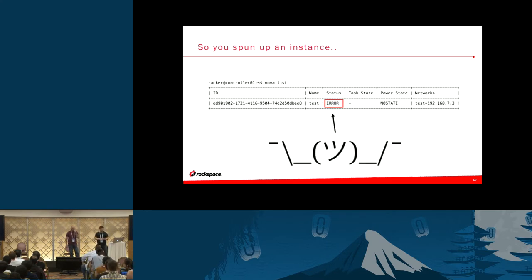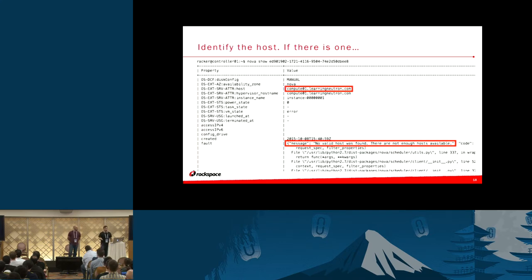Let's say you go to spin up an instance and it's in an error state — the VM has clearly failed to launch. A few things we notice here, other than the error state, is that you are given a network address, so you have an IP, which tells us at least that the Neutron API is functioning properly. When you hop into 'nova show' you see a stack trace, but among the stack trace we know we have a libvirt instance ID and we know which compute node it landed on.